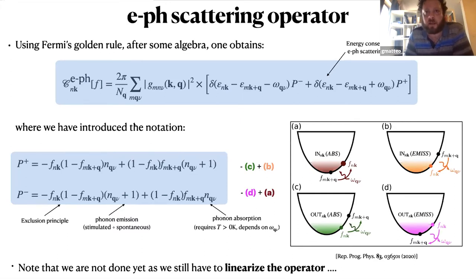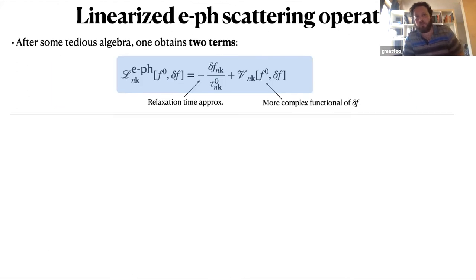Now, if we start from the previous electron-phonon interaction, and we use Fermi's golden rule, we obtain the following expression for the total electron-phonon scattering operator. Note that here we have two delta functions that are enforcing energy conservation for the electron-phonon scattering process, and these two coefficients, p minus and p plus, are related to the occupancy for electrons and phonons. Here you have essentially the exclusion principle in action, and then n_q plus one is associated to phonon emission, and n_q is associated to phonon absorption. And here I'm schematically depicting these four processes using this figure from this paper. Note that all the terms have a sign, depending whether the electrons are entering or leaving the nk state.